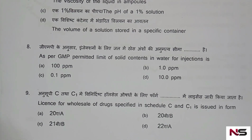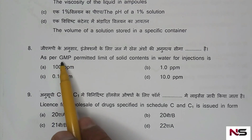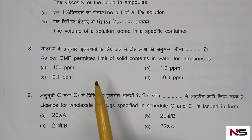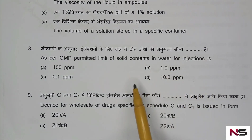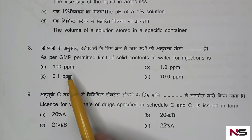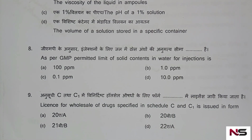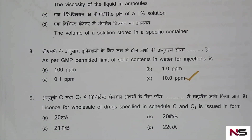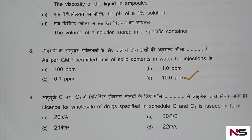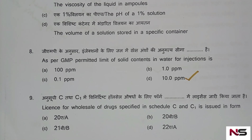Question 8: As per GMP, the permitted limit of solid contents in water for injection — options: A) 100 ppm, B) 1 ppm, C) 0.1 ppm, D) 10 ppm. The correct answer is 10 ppm. This is an important question that has been asked in many pharmacist exam papers, not only ISRO but also many state government exams.